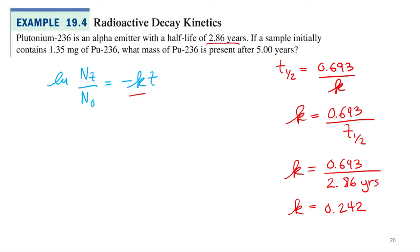0.242. What are my units? Years? Years is on the bottom, so it'll be 1 over years, or we could just write it as reciprocal years, years to the minus 1.